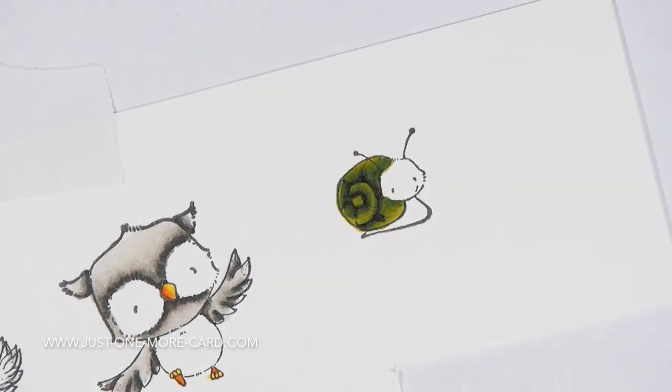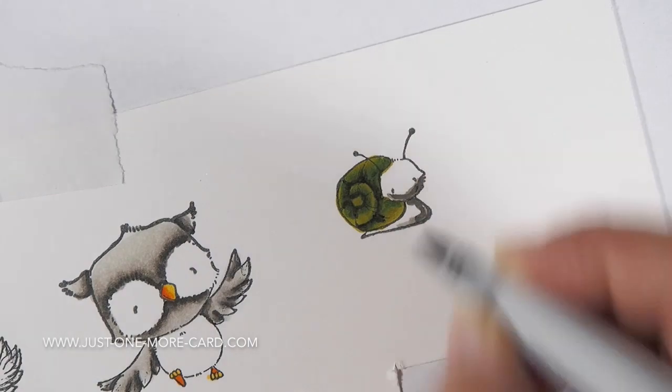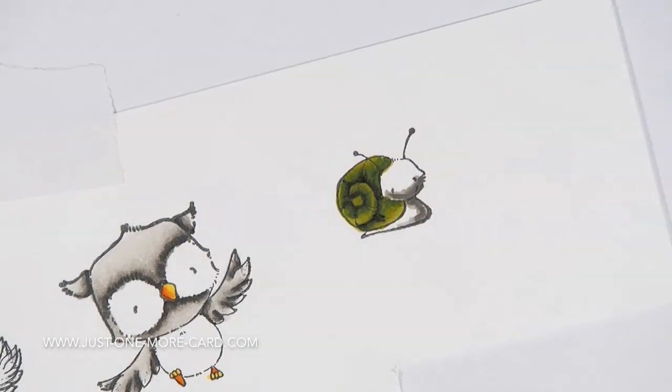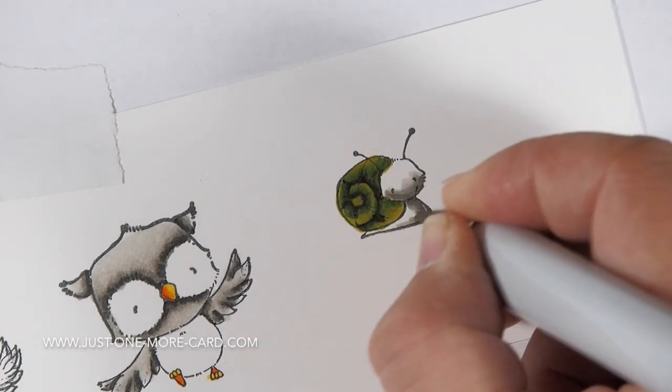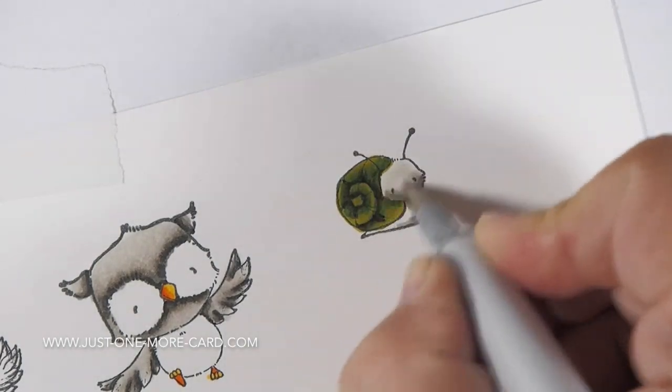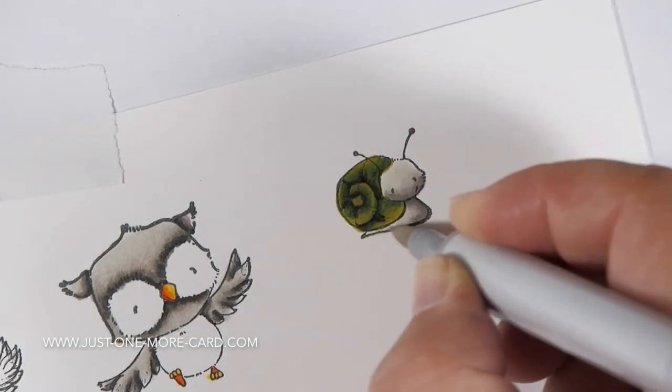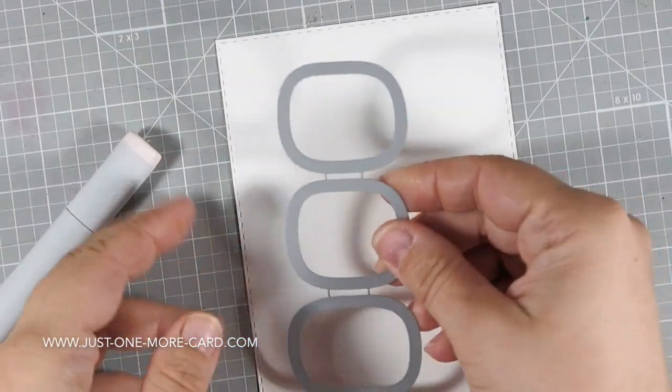There we go. And then I'm just using a few warm grays here for the body of the snail, again adding just a tiny little bit of the darker color there and then blending this out with the lightest color. Because I don't want this to be too dark. There we go.